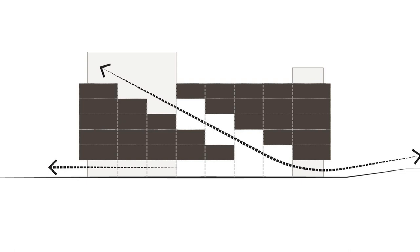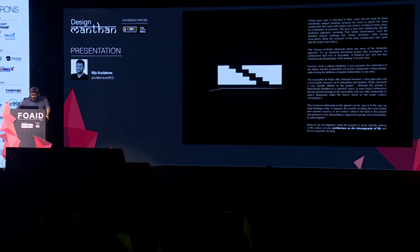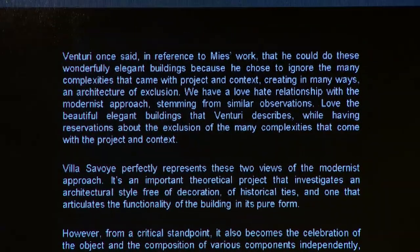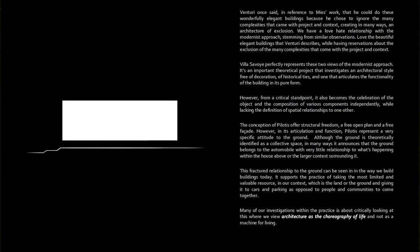The conception of pilotis offers structural freedom, a free open plan, a free facade. However, in its articulation and function, pilotis represent a very specific attitude towards the ground. Although Corbusier talked about the ground being the collective space, when you actually study the plan, it announces that the ground belongs to the automobile — with very little relationship to what's happening above or to the context it is set in. This fractured relationship with the ground can be seen all across our buildings today.